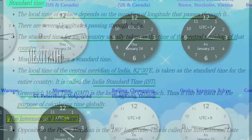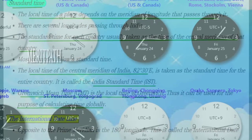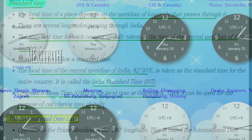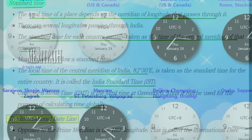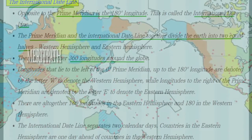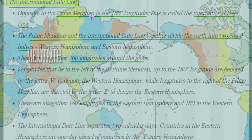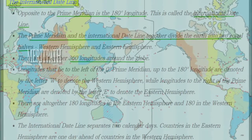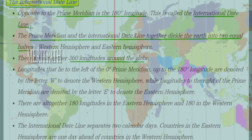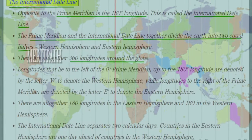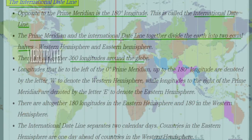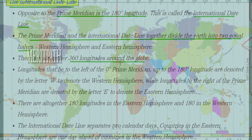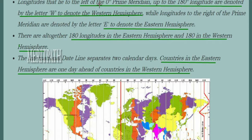There is also Greenwich Mean Time (GMT), which is the local time at Greenwich and is used for calculating time globally. All countries add or subtract hours from GMT to follow their standard times. The International Date Line is located exactly opposite to the Prime Meridian at 180 degrees longitude. The Prime Meridian and the International Date Line together divide the earth into two halves: the Western Hemisphere and the Eastern Hemisphere, spanning 360 degrees of longitude.